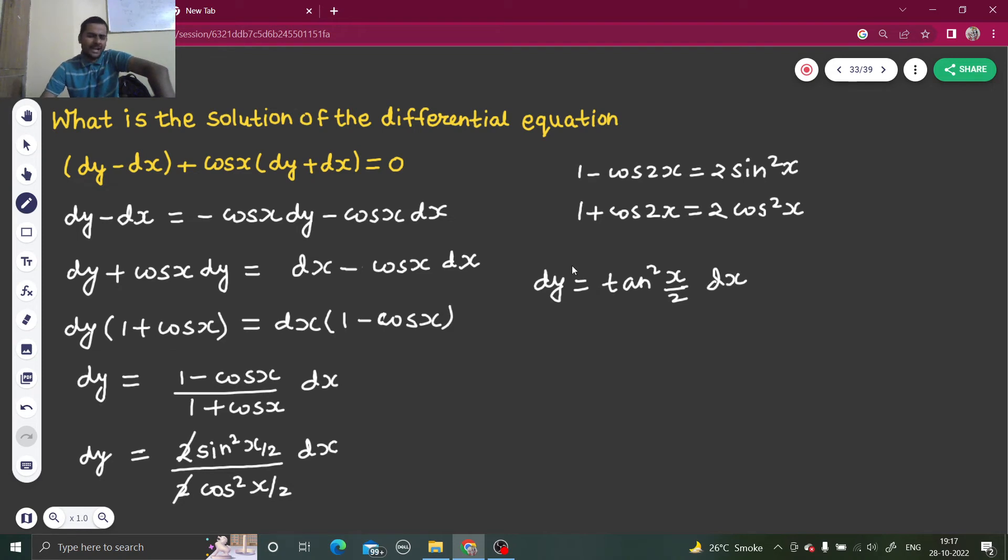Tan square can be written as secant square x minus 1. I hope you are familiar with that identity: 1 plus tan square x is secant square x. So this can be written as secant square x by 2 minus 1.